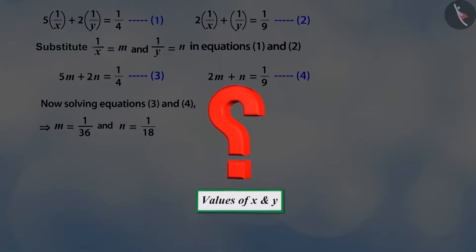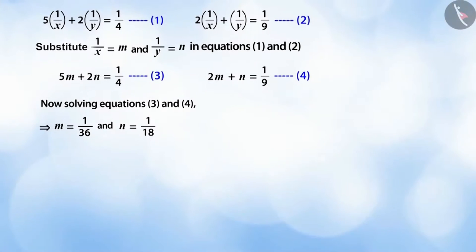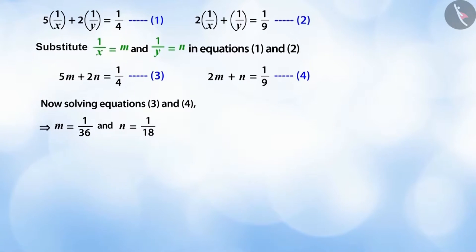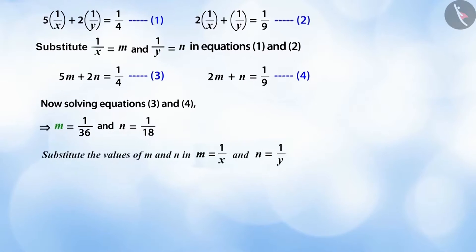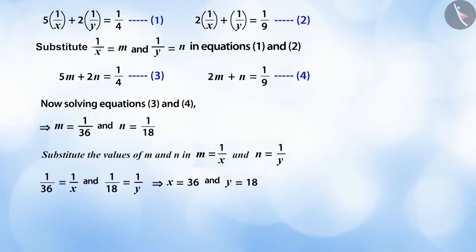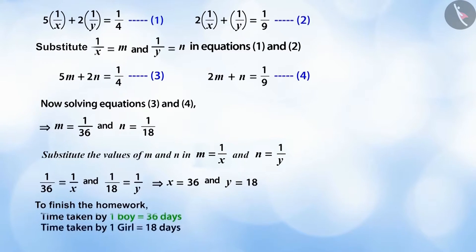But can you tell what we need to do in order to find the values of x and y? Because we assumed 1/x as m and 1/y as n, so now when we replace m back as 1/x and n as 1/y, we get x = 36 and y = 18. Therefore, to finish the homework, one boy will take 36 days and one girl will take 18 days.